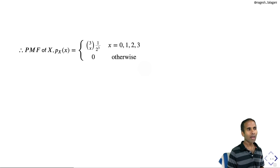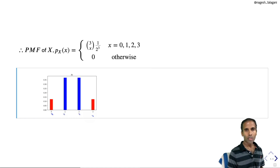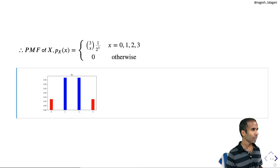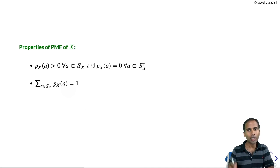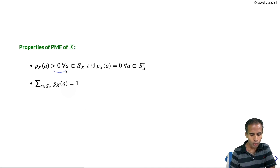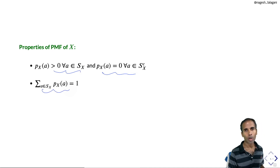The bar diagram for this PMF shows values 1/8 at 0 and 3, and 3/8 at 1 and 2. Properties of the probability mass function: first, the PMF is a non-negative function, positive over the support and 0 outside the support; second, the sum of the PMF values over the support equals 1. These two properties completely characterize probability mass functions.